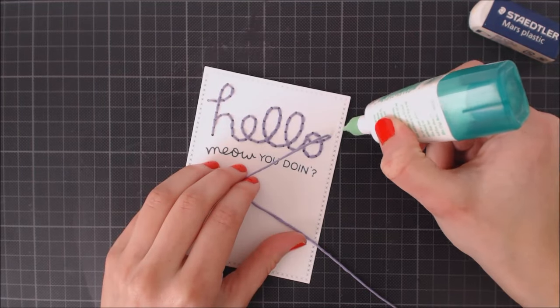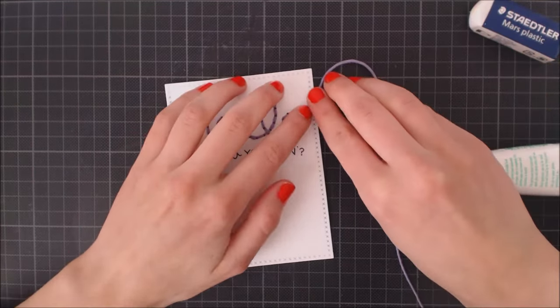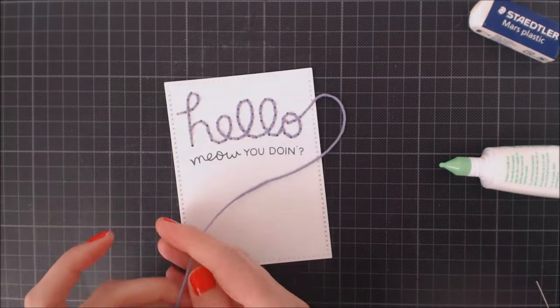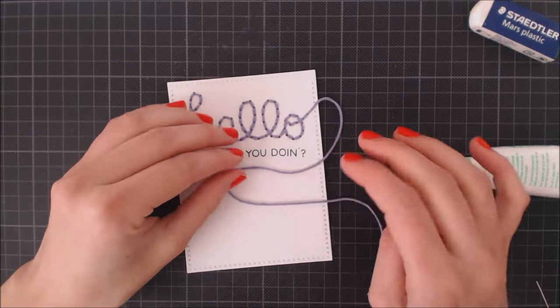I start by placing the yarn where I want it, then I apply super teeny dots of glue, place the yarn on top, and press down to adhere it.